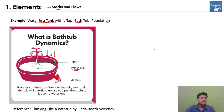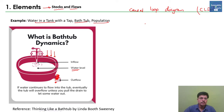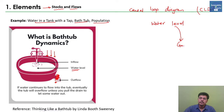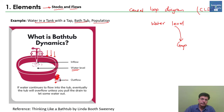In the causal loop diagram (CLD), the first element we see is the water level. Depending on this water level, there will be a perceived gap. For each arrow we represent a positive or negative sign — whether it positively or negatively affects the next element. If the water level is low, the gap will be more; if the water level is already high, the gap will be less — so this arrow gets a negative sign.